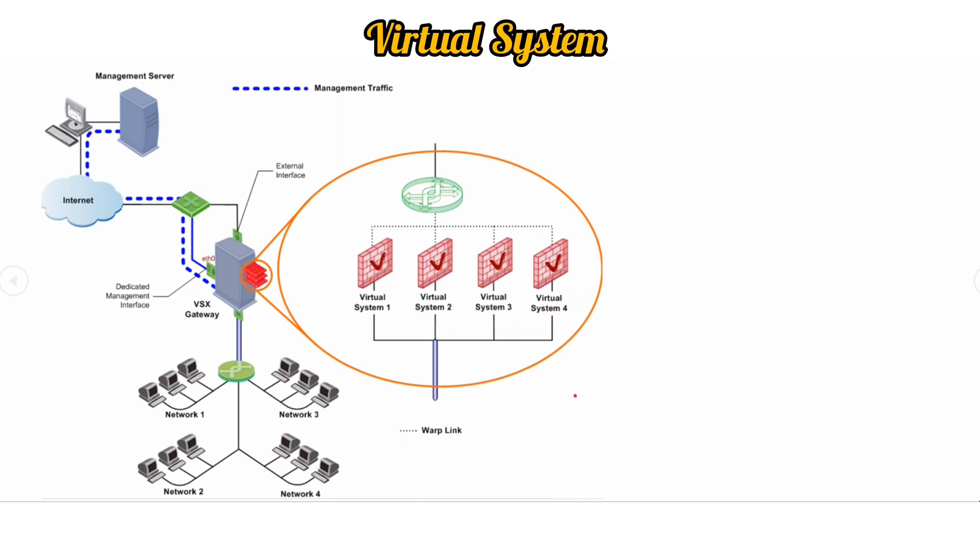Virtual systems is a security and routing domain that provides the functionality of security gateway with full firewall and VPN facilities. Virtual systems is nothing but your firewall. Virtual system maintains its own software blades, interfaces, IP addresses, routing table, ARP table, and dynamic routing configuration.